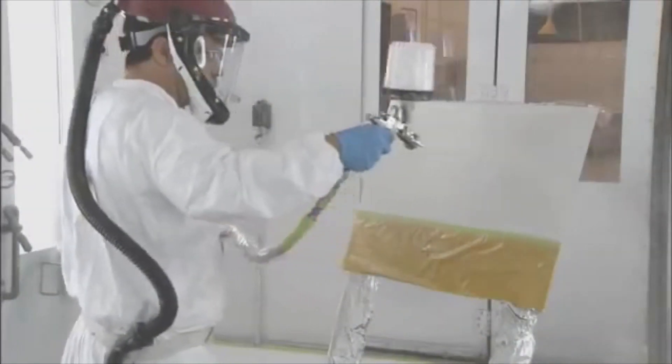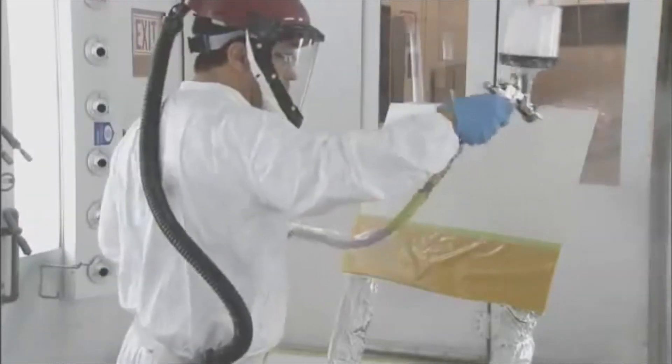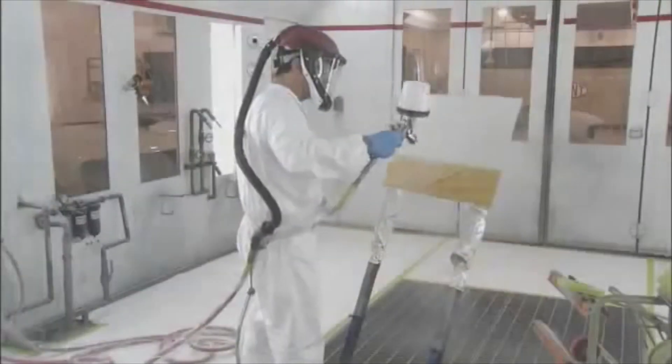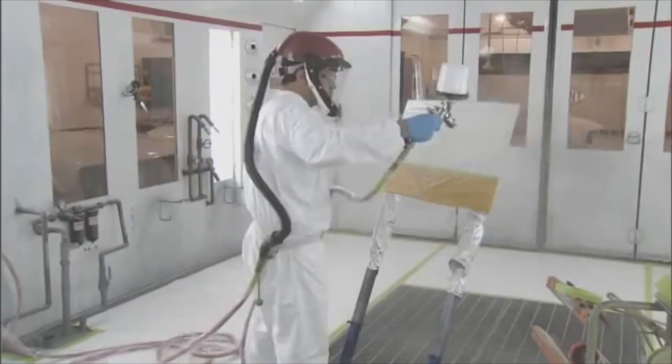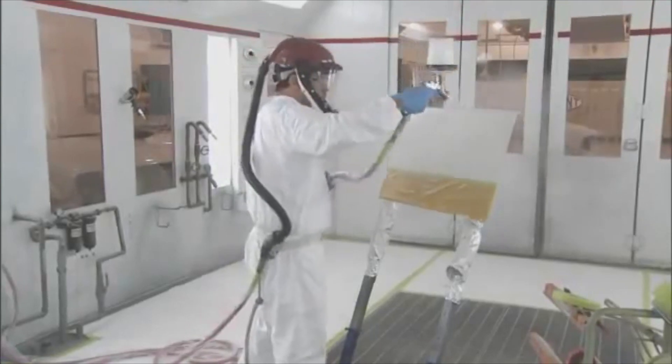Apply a second 8-inch application of pearl mid coat over the exposed panel area. Next, without flash, immediately apply a 12-inch effect coat of pearl mid coat over the exposed panel area.